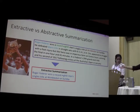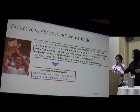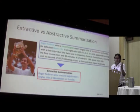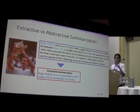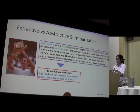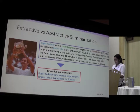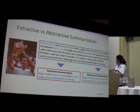Whereas abstractive summarization has a generation component to it. So it does not have the constraints which extractive summarization has, and thus it will be able to generate a stronger summary.